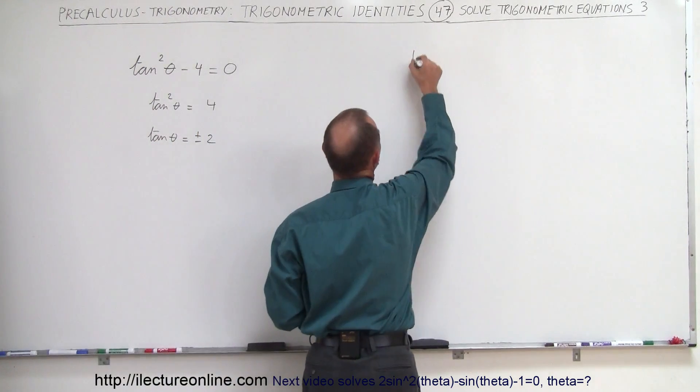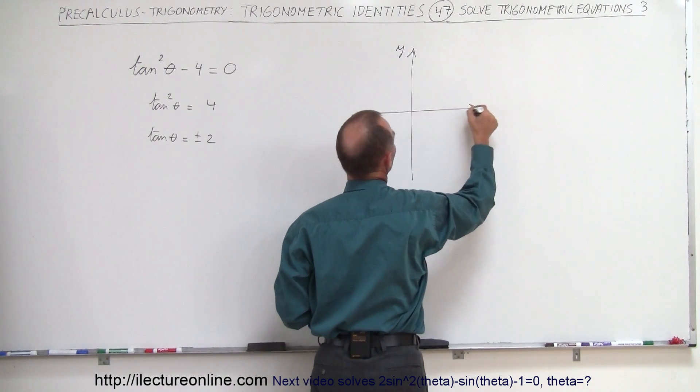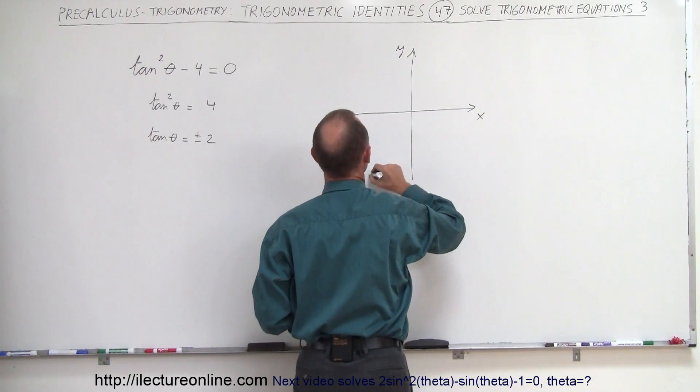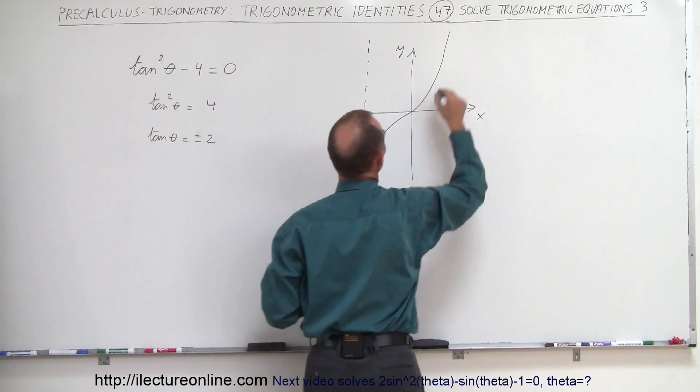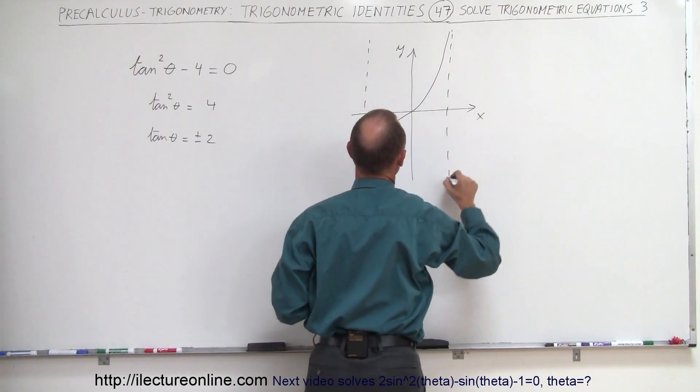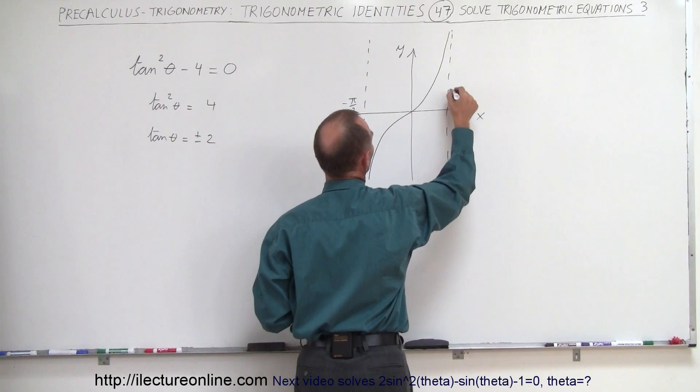if we graph that, it kind of looks like this. So there's our y-axis, there's our x-axis. The tangent of theta has a graph that looks like this. And it has an asymptote over here, it has an asymptote over there. And that would be minus pi over 2 and plus pi over 2.